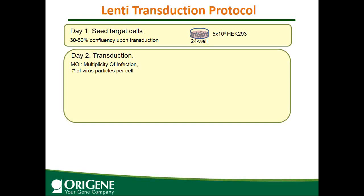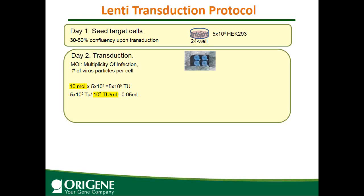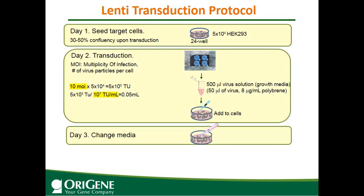For example, if you want to use MOI 10, multiply by the total number of cells seeded in the well — that gives the total units of virus needed per well. Assuming a viral titer of 1×10⁷ units per mL, divide total virus by titer to get the volume of virus needed. Thaw the virus on ice. For a 24-well plate, per well make a 500 µL virus solution in growth medium containing 50 µL of virus. You also need to use polybrene, which increases transduction efficiency, at a working concentration of 8 µg/mL. Then add to cells.